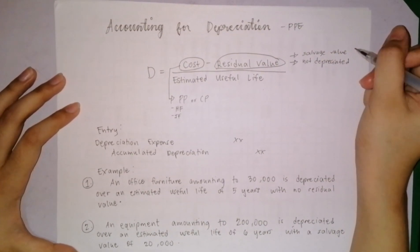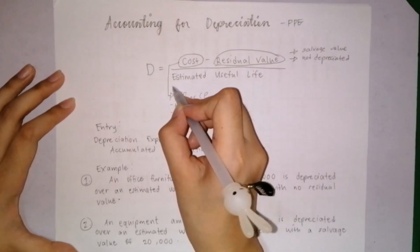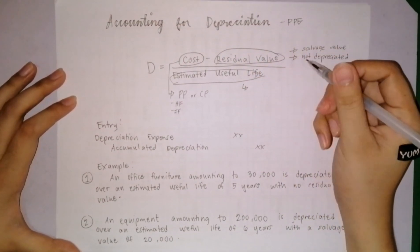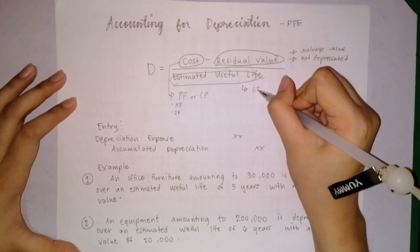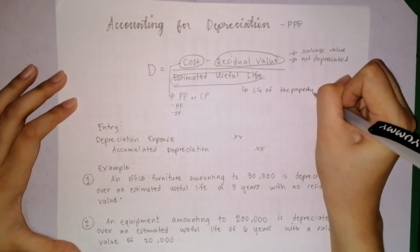Last thing we will define is the estimated useful life. Estimated useful life is the period how long a company or business can use the PPE. Simply, it is the life of the property.